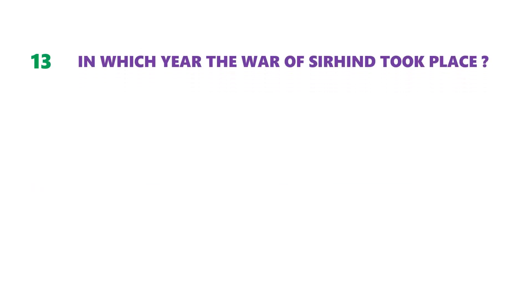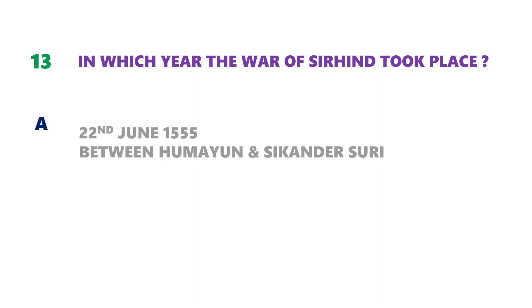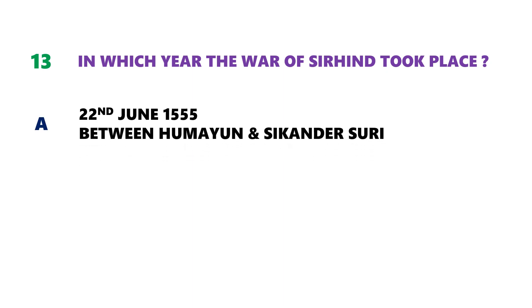Question number 13: in which year did the war of Sarhin take place? On 22nd June 1555 the battle of Machivara was fought, and in 1555 the war of Sarhin took place. It was fought between Humayun and Sikandar Suri.